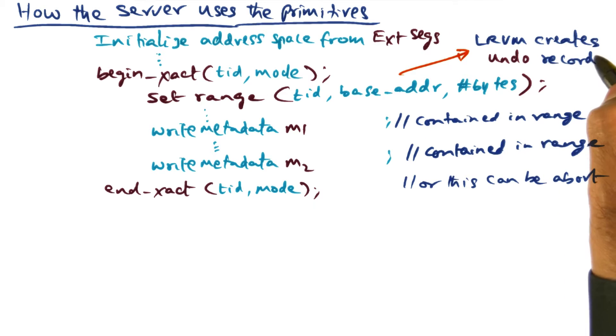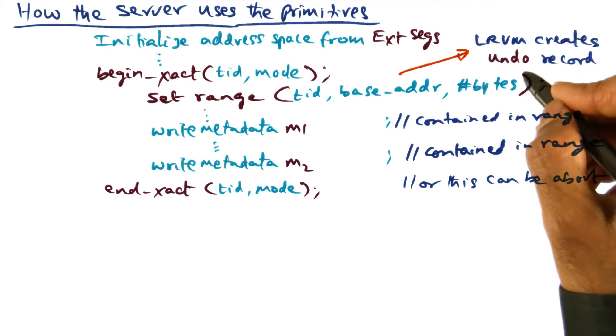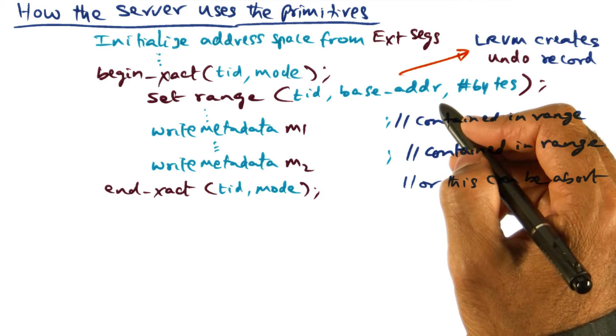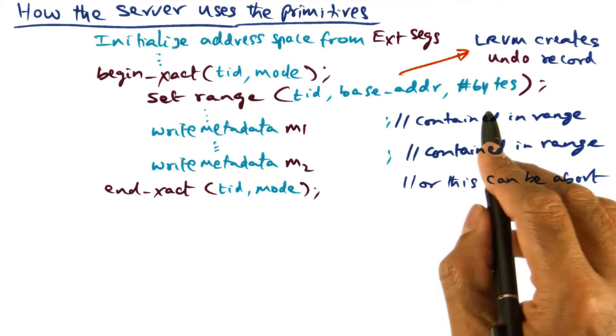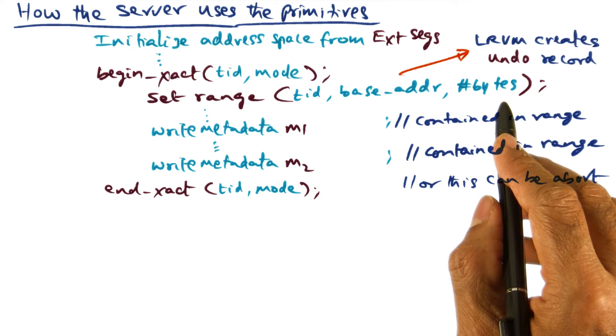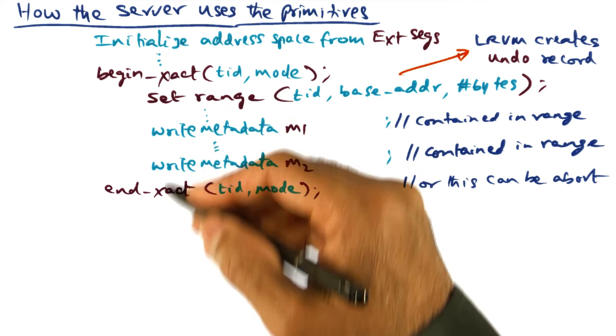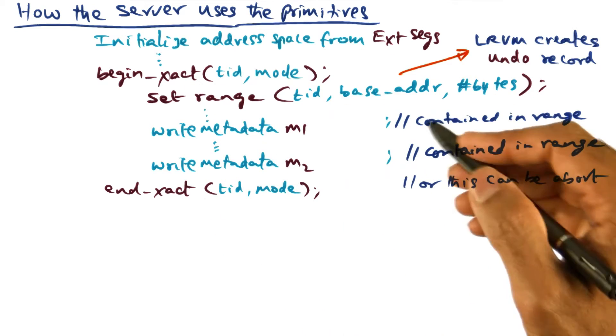And therefore, the first thing that LRVM does is create what is called an undo record, which is really a copy of the virtual address space starting at this base address for this number of bytes. That's the portion of the address space that the developer intends to modify within this critical section.